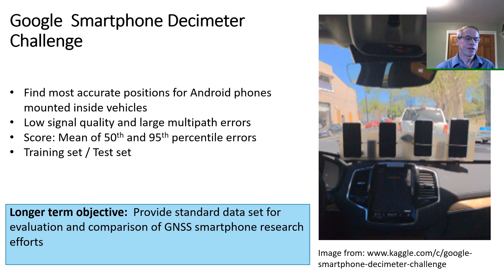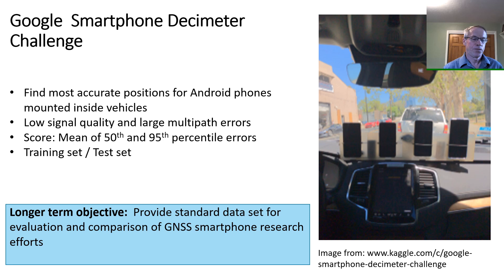First, a little about the competition itself. The goal was to generate the most accurate solutions from raw Android GNSS data. To collect the data, Google mounted phones on the dashboards of a number of vehicles, as shown in this image. They then collected data from multiple rides in San Francisco and Los Angeles areas of California, from both the Android phones and simultaneously ground truth from a high-end GNSS/INS system.